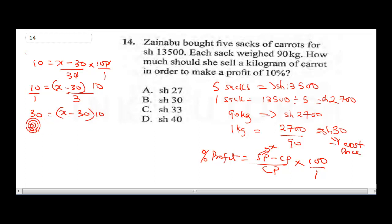So let's expand our bracket. This is going to be 30 equals 10 times X, which is 10X minus 300. Collecting like terms, 30 plus 300 will give us 10X. This will be 330 equals 10X. Divide both sides by 10. Our X will be 330 divided by 10. Remember our X, we said is our selling price, so this will be 33 shillings. So for her to make a profit of 10%, she has to sell it for 33 shillings. The correct answer is C. That will take us to question 15.